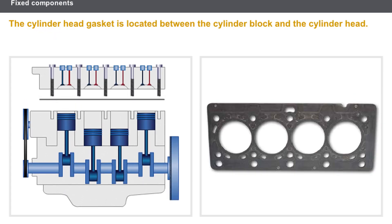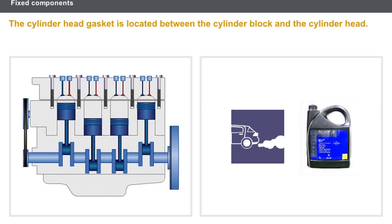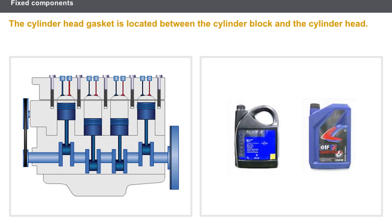The cylinder head gasket is located between the cylinder block and the cylinder head. Its role is to provide a seal between the following elements: the combustion gases and the coolant fluid, the combustion gases and the engine oil, and the engine oil and the coolant fluid.